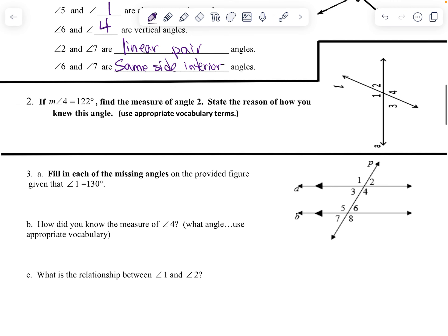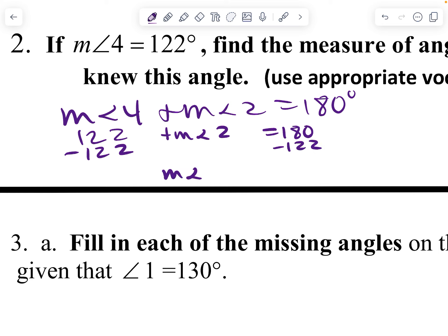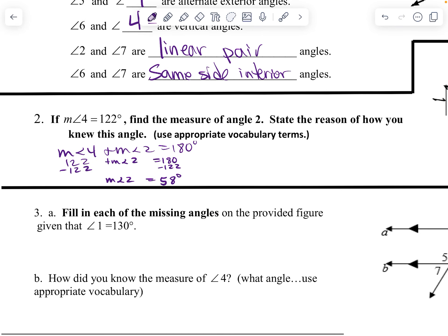The measure of angle four is 122 degrees. We need to find the measure of angle two. Angle two is a linear pair with angle four, so the measure of angle four plus the measure of angle two has to equal 180 degrees. 122 plus the measure of angle two equals 180. Subtract 122 from both sides, and we get the measure of angle two equals 58 degrees. The reasoning: they are a linear pair.